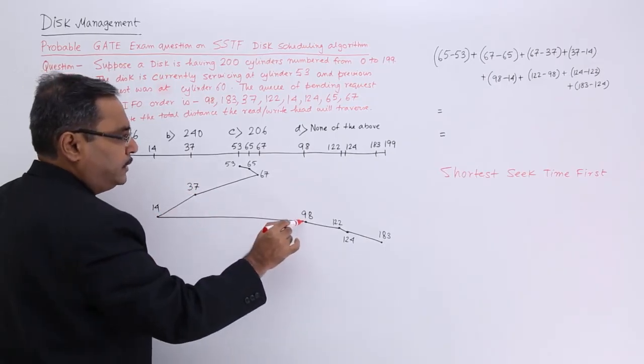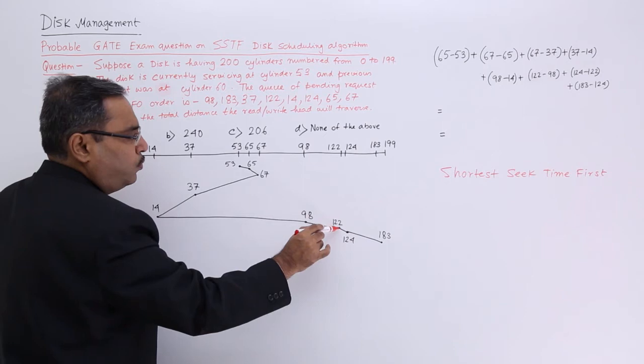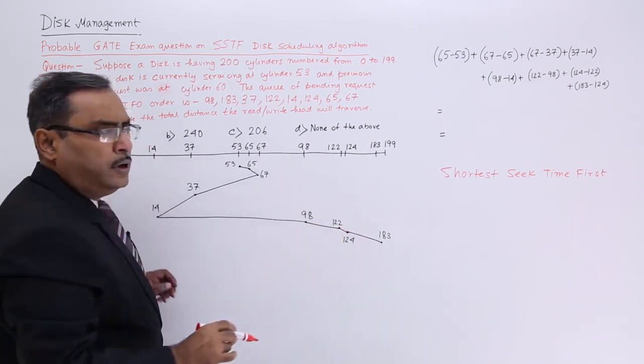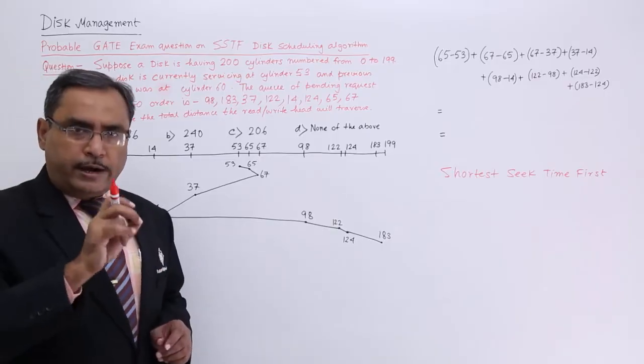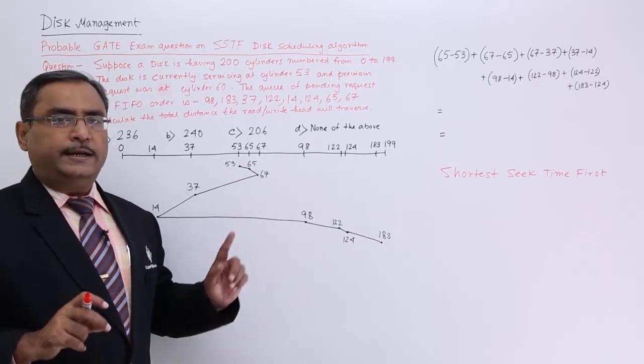On the return journey, I shall come to 98, 122, 124, and 183. In this way, the read head will move and serve these cylinders.